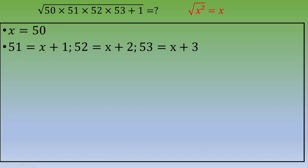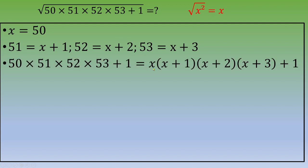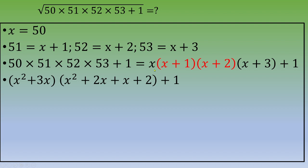Now you plug these values into the expression and obtain x times (x+1) times (x+2) times (x+3) plus 1. Then you multiply the first term and the fourth term: x times (x+3) gives x squared plus 3x. You do exactly the same with the second and third terms: (x+1) times (x+2) gives x squared plus 2x plus x plus 2, which is x squared plus 3x plus 2. Don't forget to add 1 at the end.